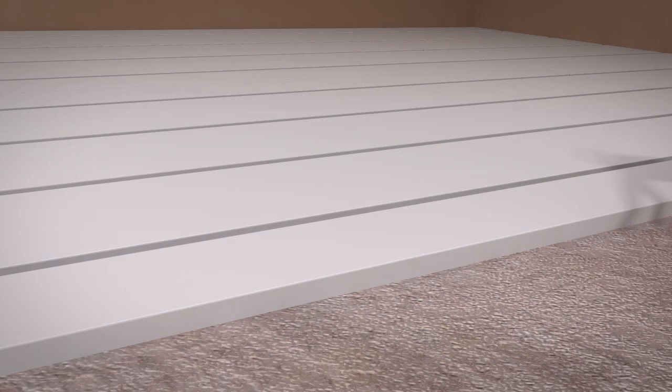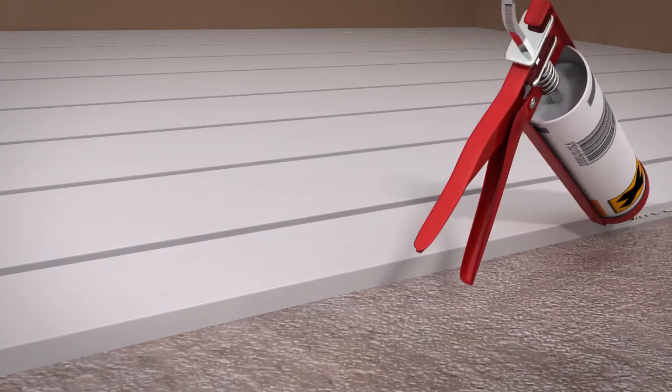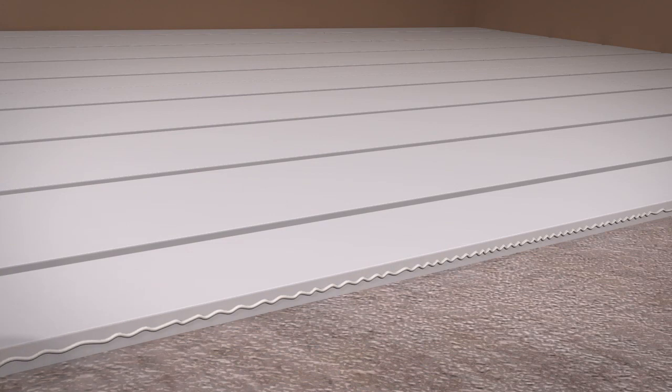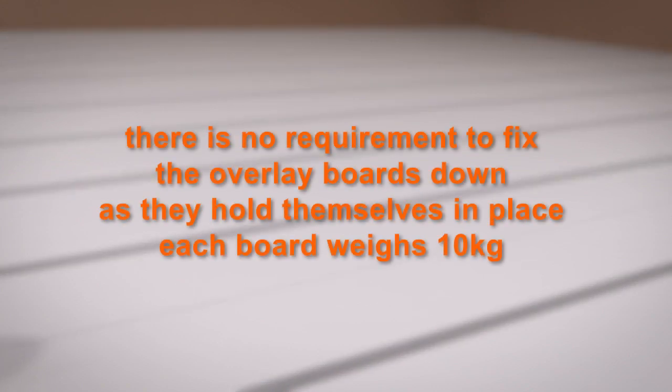The boards are laid in place and a bead of glue is applied along the edges before the adjacent boards are laid. The end supports require fixing down to the subfloor. However, there is no requirement to fix the overlay boards down as they hold themselves in place. Each board weighs 10kg.